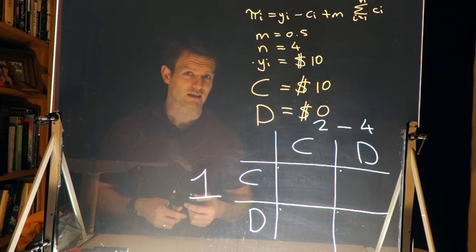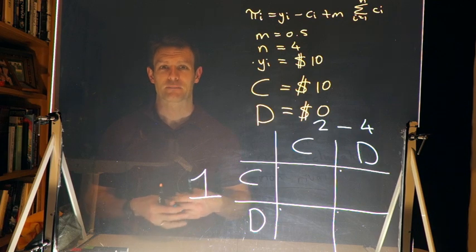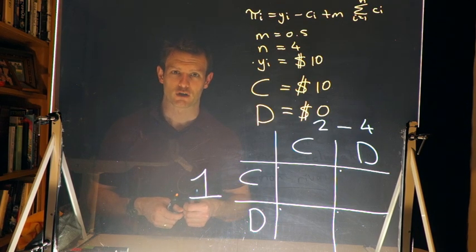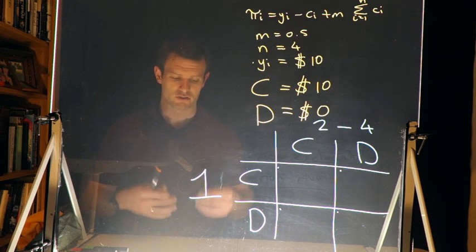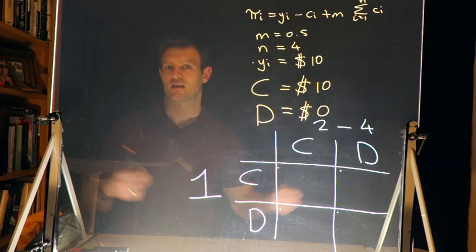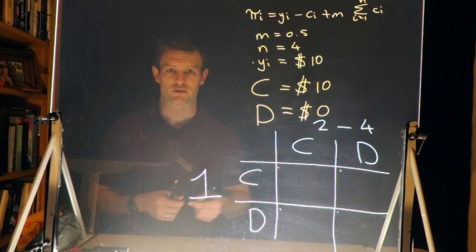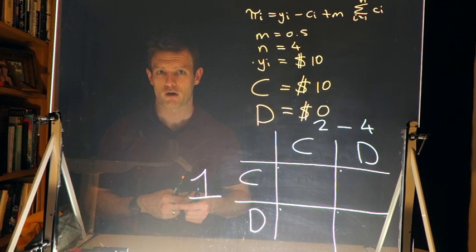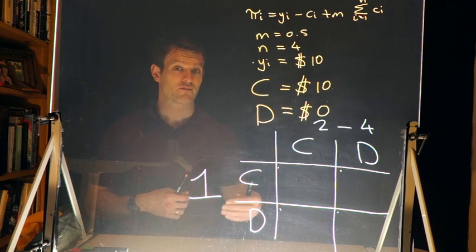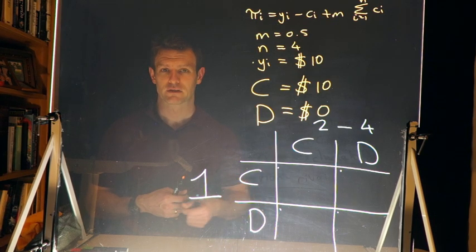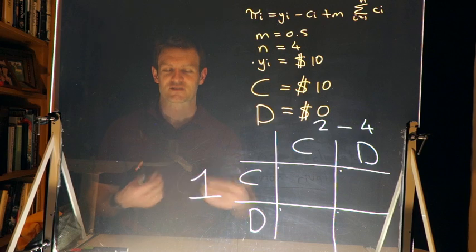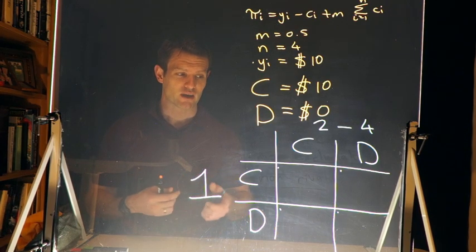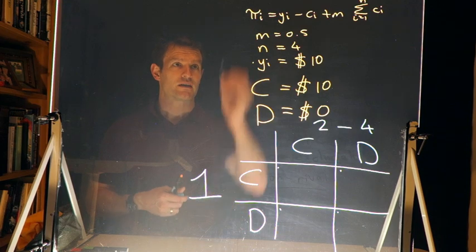In an actual lab experiment, players typically have many more options — for example, giving in increments of one dollar from zero to ten — so there would be many more outcomes. However, we want to simplify this and think through why this is a social dilemma and why it looks like a prisoner's dilemma game.